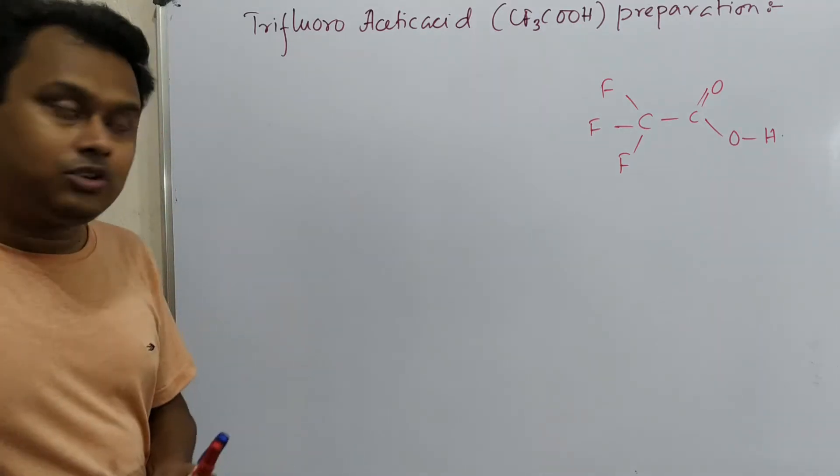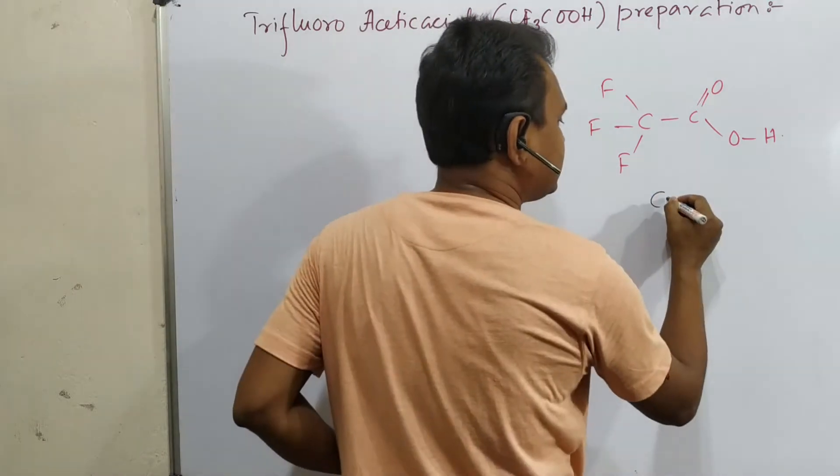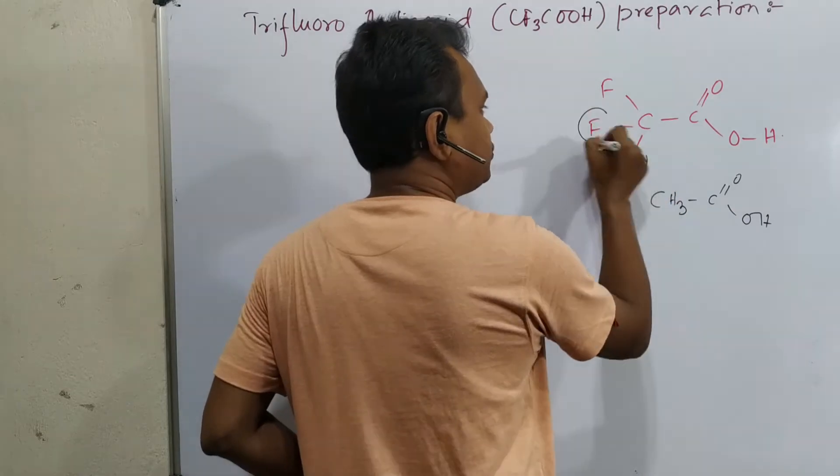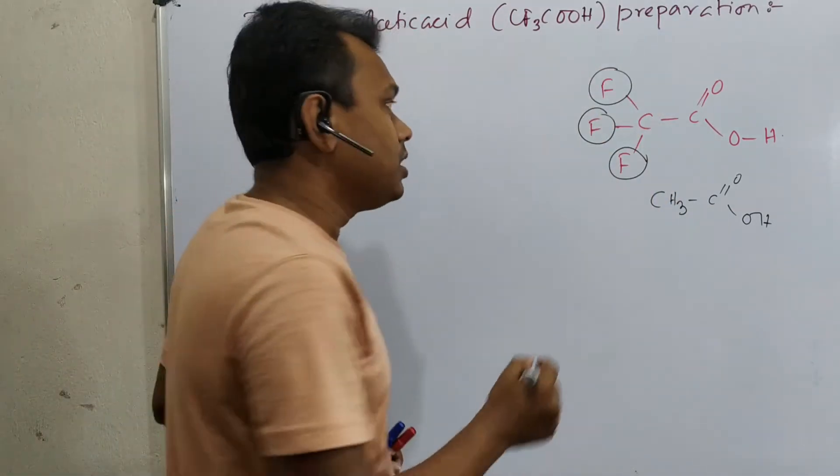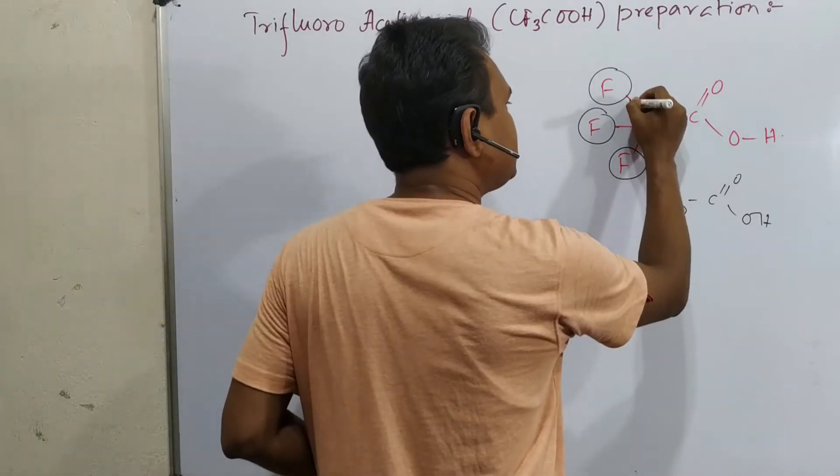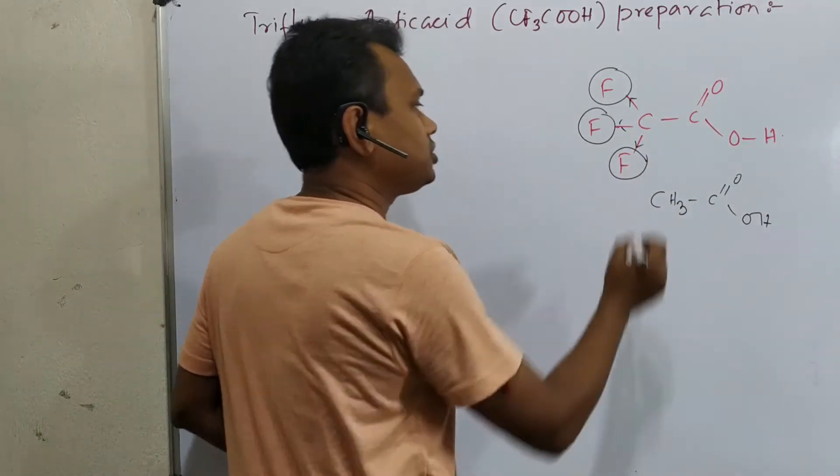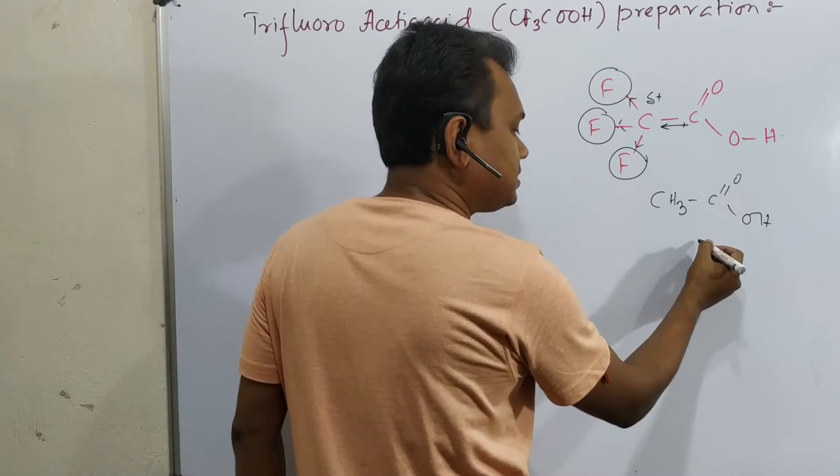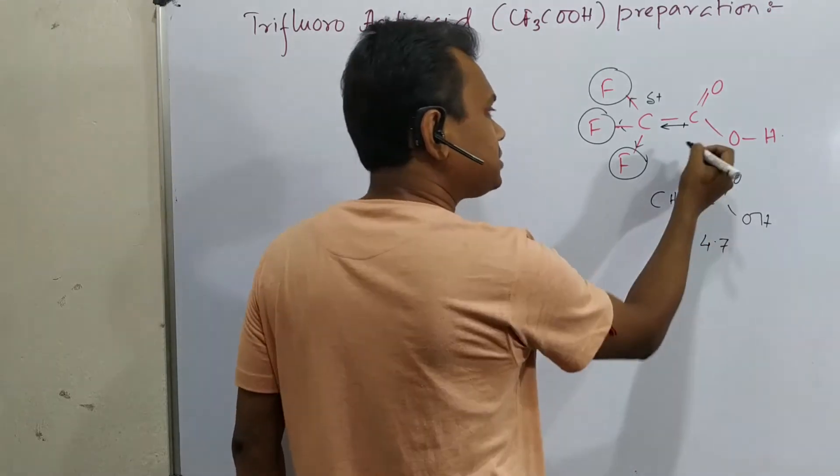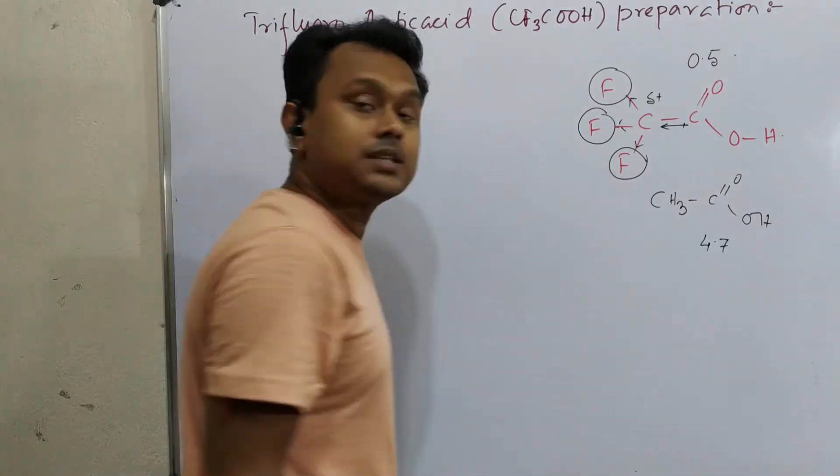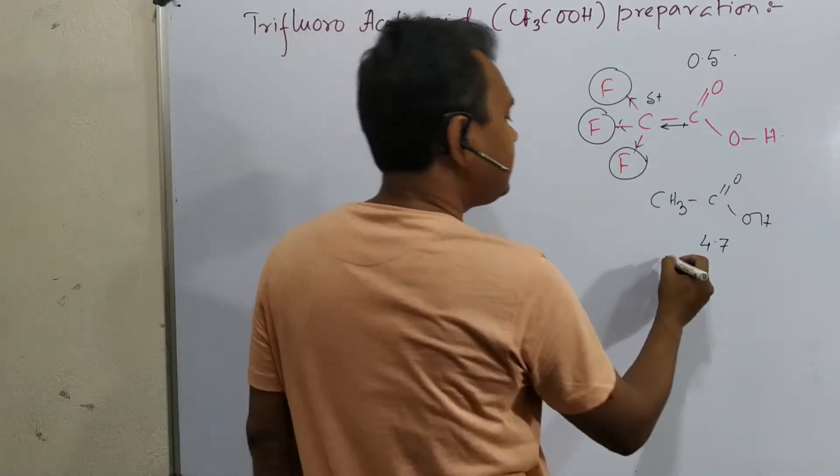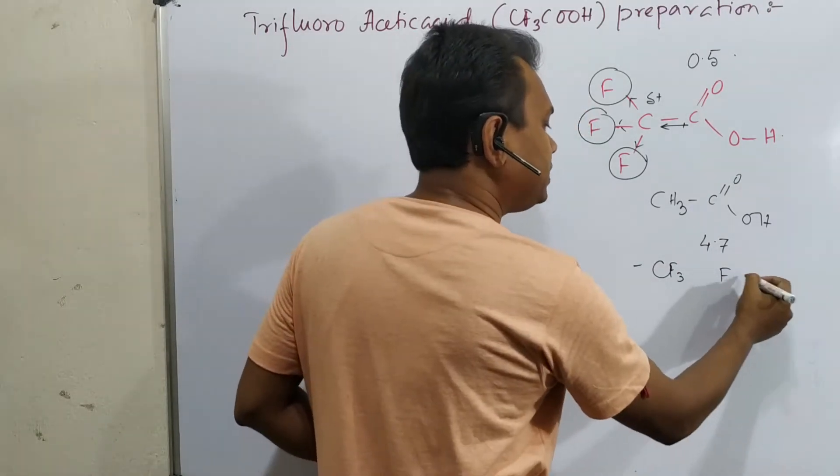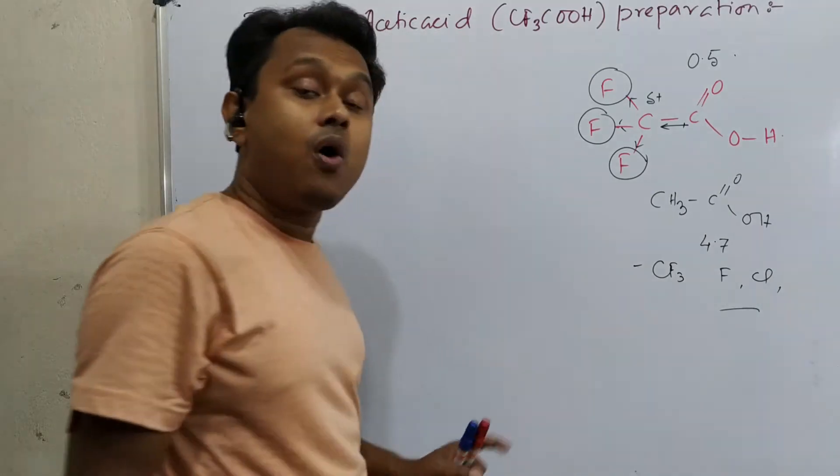See, the uniqueness of this compared to simple acetic acid. Simple acetic acid compared to trifluoroacetic acid. We know that fluorine is the most electronegative atom on the Pauling scale. So it withdraws the electron density towards itself. Consequently, this carbon becomes delta positive and it also withdraws. That's why when acetic acid pKa is about 4.7, its pKa is about 0.5. Just see the difference.